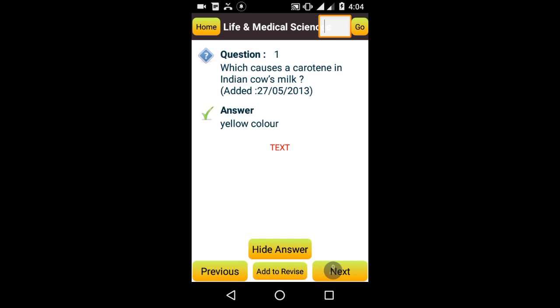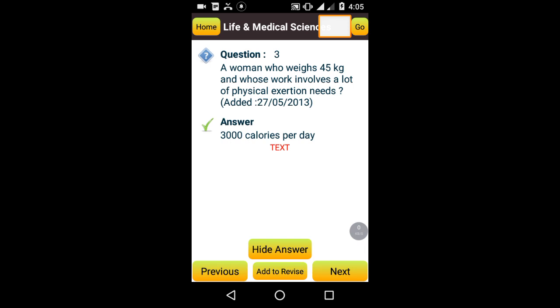Yellow color. Food and mouth disease is found in which animal? Cattle. A woman who weighs 45 kg and whose work involves a lot of physical exertion needs 3000 calories per day.